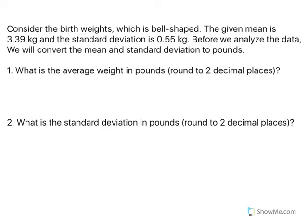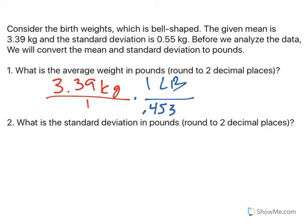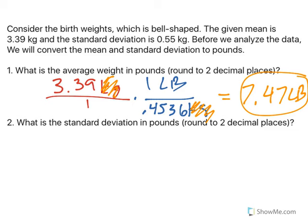First, average weight in pounds. We start with 3.39 kilograms, and we need to change those kilograms to pounds. We go to our handy-dandy cheat sheet, and we know that one pound is 0.4536 kilograms. Kilograms on the top cancels out with kilograms on the bottom, and because the 0.4536 is at the bottom, we divide, and I end up with 7.47 pounds to two decimal places.